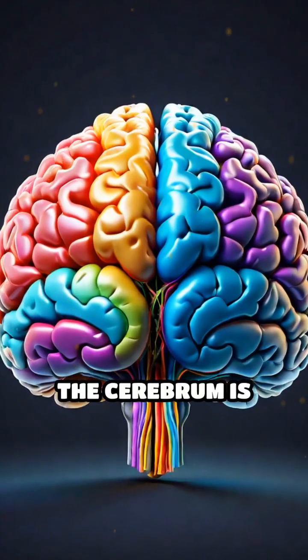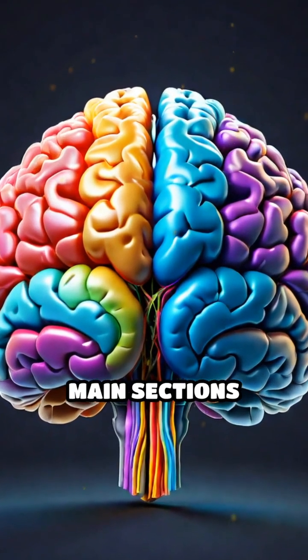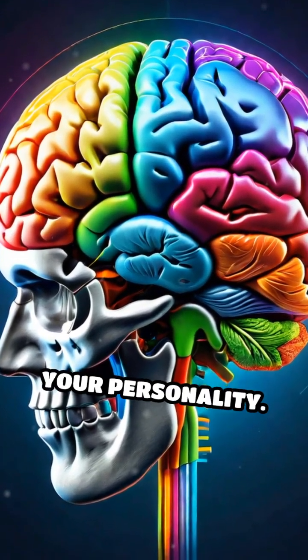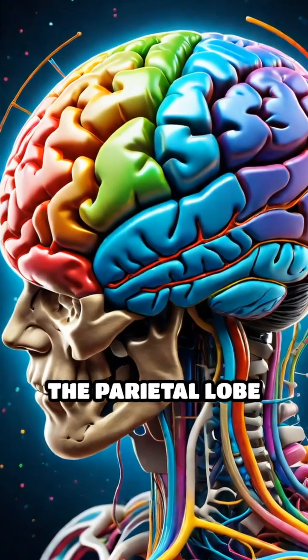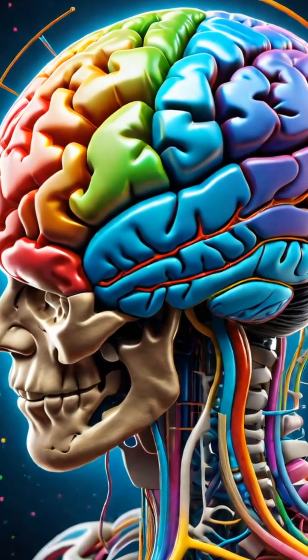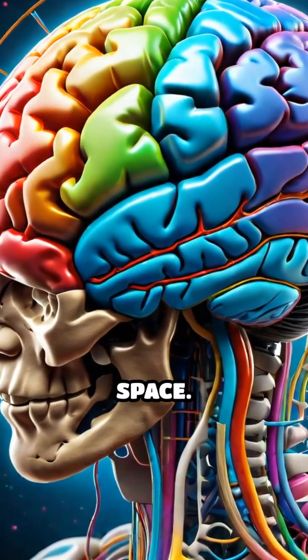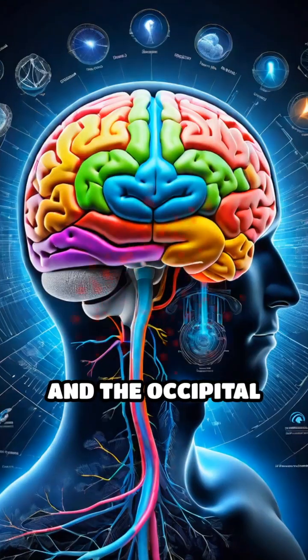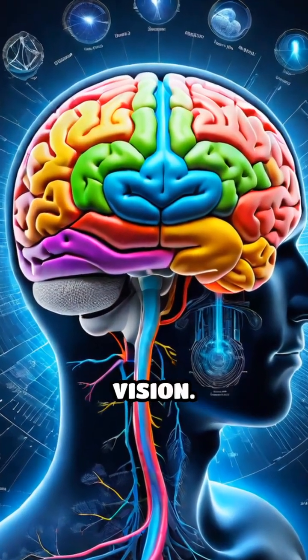The cerebrum is divided into four main sections called lobes. The frontal lobe is your planner and plays a big role in your personality. The parietal lobe processes your senses and helps you understand space. The temporal lobe deals with hearing and memory, and the occipital lobe is all about vision.